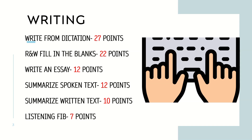Reading and writing fill in the blanks is the first module of the reading section and is the second highest contributor in writing, contributing 22 points. You select one correct option from four choices for each blank. A correct option gives you one point; an incorrect option gives zero. There is no negative marking in write from dictation and reading and writing fill in the blanks.